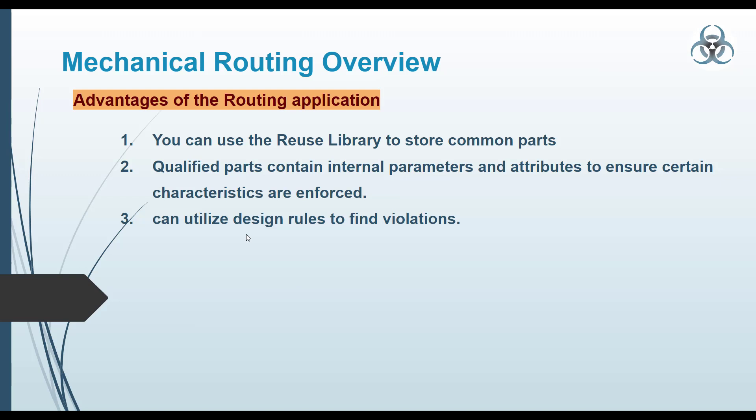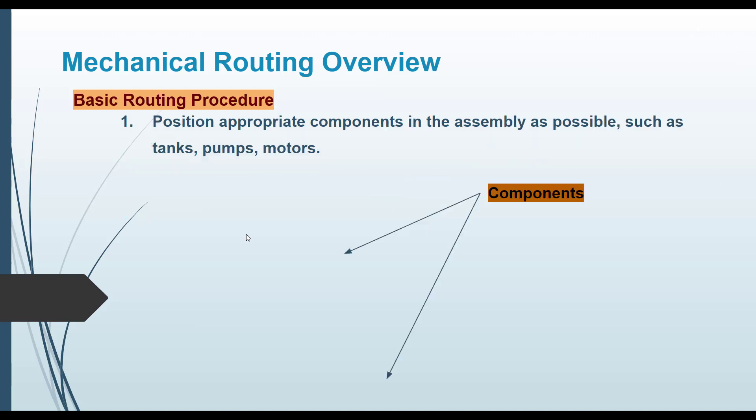Another advantage is the utilization of design rules to find violations. Whenever you are doing mechanical routing, there will be certain rules to follow. For example, similar to sheet metal where a minimum bend radius must be maintained — otherwise stress concentration develops and the bracket may break — in mechanical routing, when linear paths are created and bends are required, there are minimum criteria that must be matched. These are called design rules, and if any rule is violated, you can identify and address it using the mechanical routing tools.